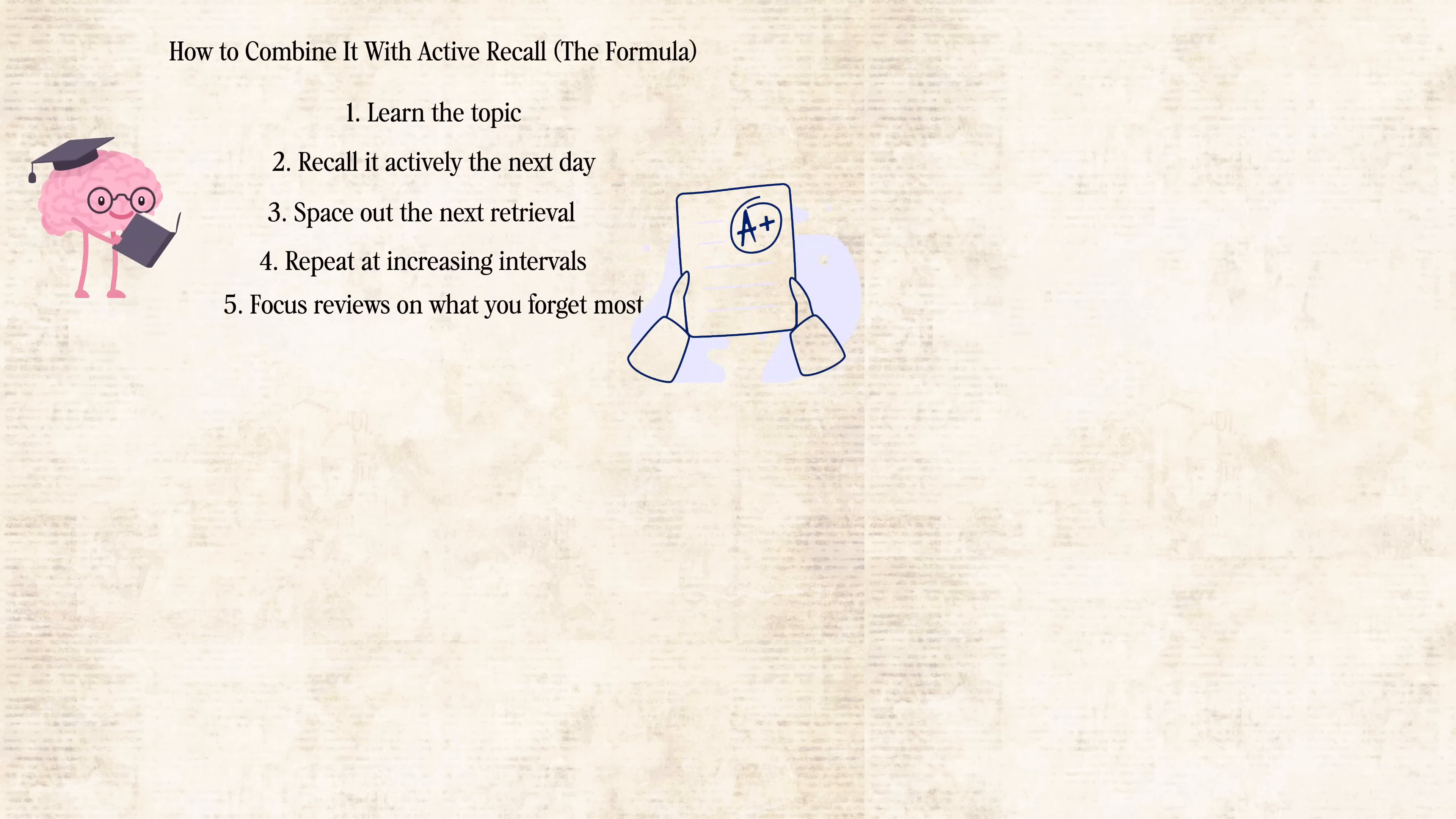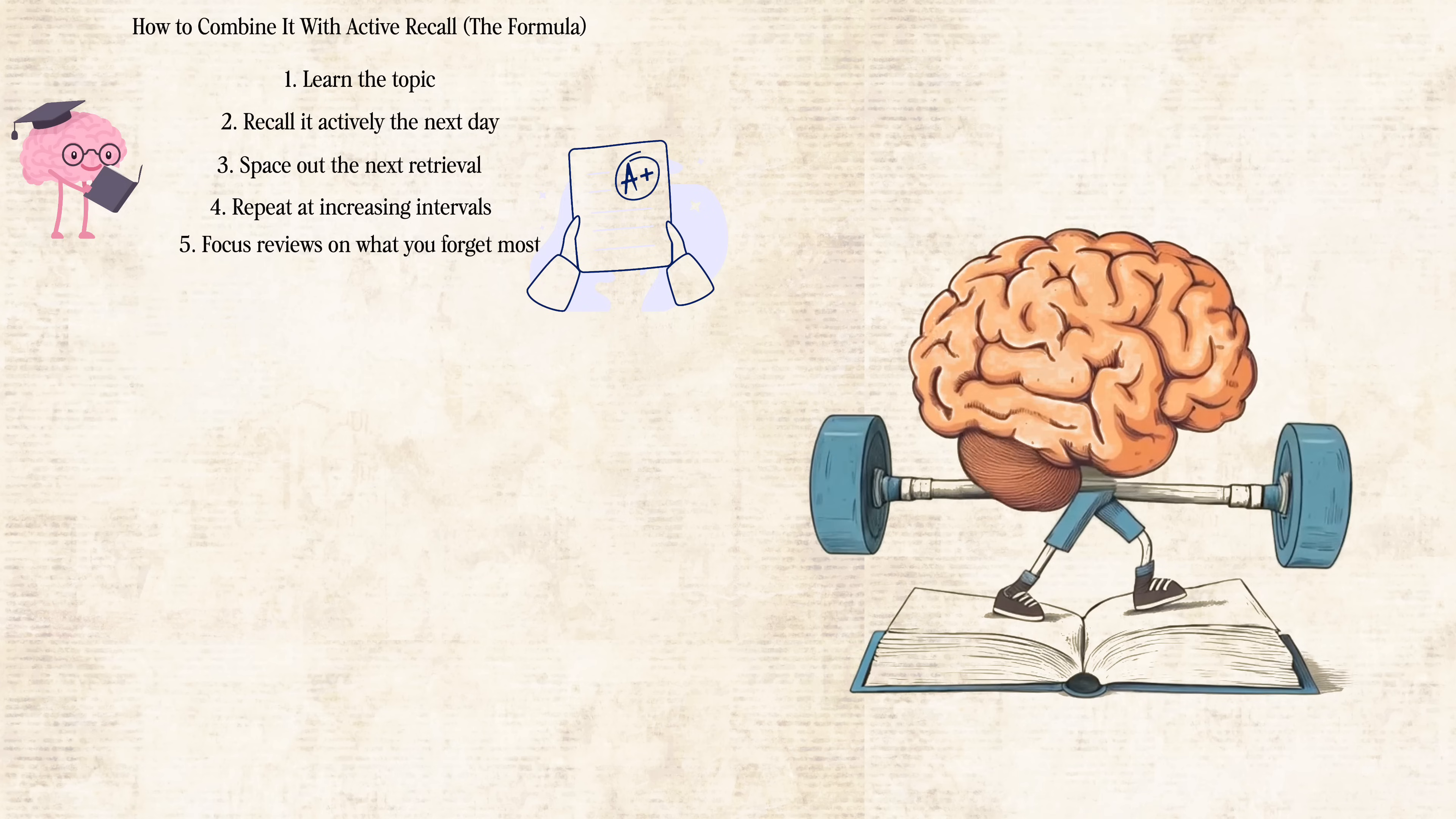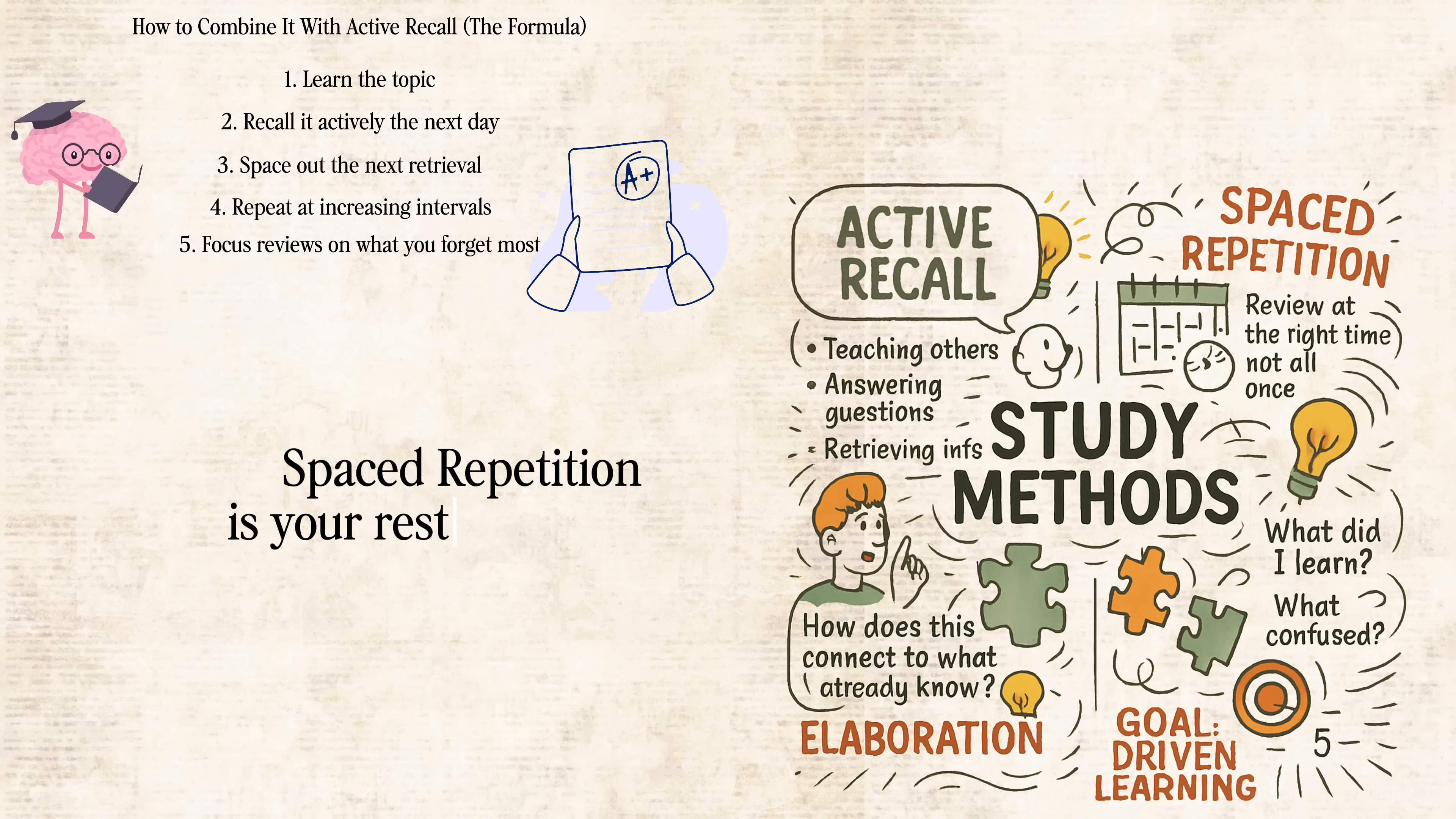Think of your brain like a muscle. You don't get stronger by doing bicep curls every hour. You do them, then rest, then do them again at the right time. That's how growth happens. Spaced repetition is your rest-recall cycle. And when paired with active recall, it's the most powerful tool in all of studying.